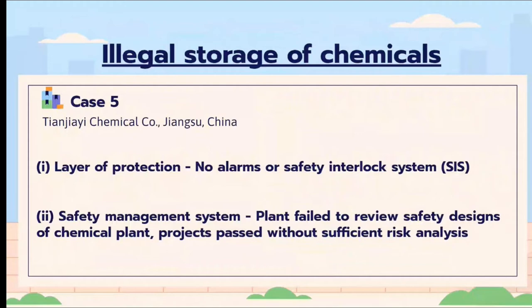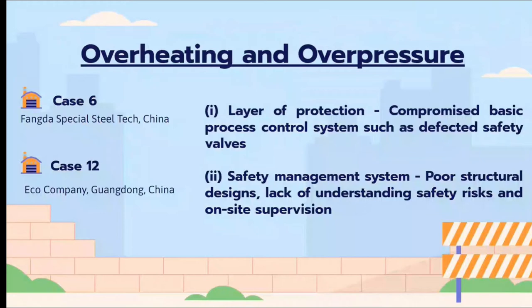The next category is overheating and overpressure, which involves Case 6, which resulted in a blast furnace explosion due to overheating and pressure, and Case 12, which also resulted in an explosion due to overheating. The layer of protection was compromised by a defective safety valve. The safety management system showed poor structural design, lack of understanding of safety risks, and insufficient on-site supervision.